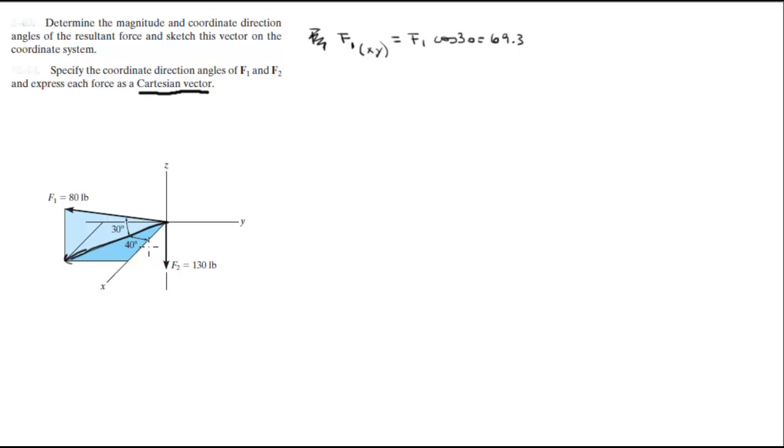So that projection is equal to F of 1 cosine of 30 which is equal to 69.3. Now to find this angle, this vector right here which is the x component of F of 1, let's say F of 1 of x is equal to the projection times the cosine of 40 which is equal to 53.1.